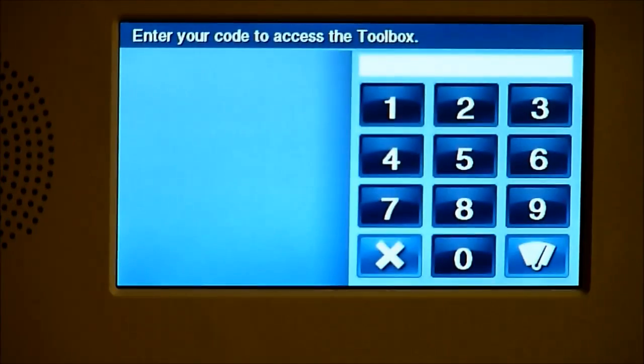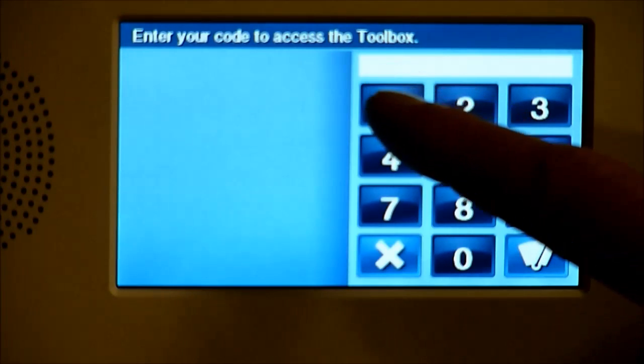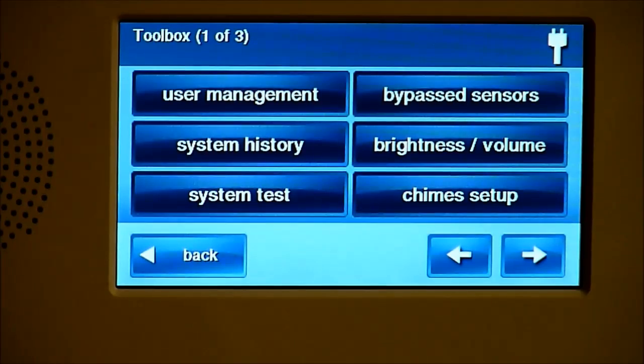You want to go ahead and enter in your installer code which is different from the master code, so enter in your installer code. Ours currently is 1561, and that is the default out of the box for the 2GIG panel.